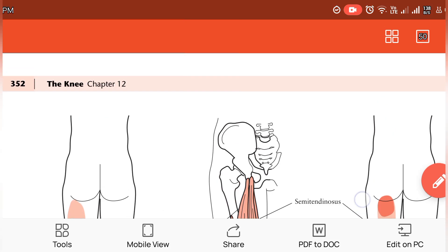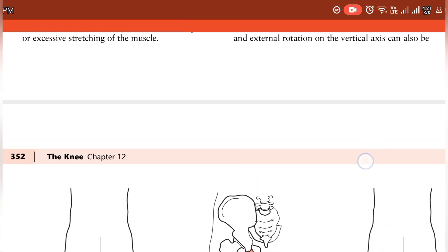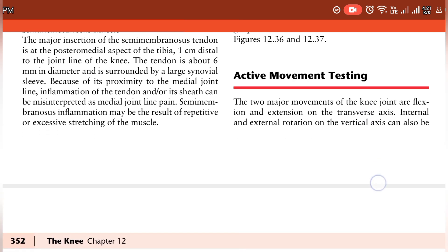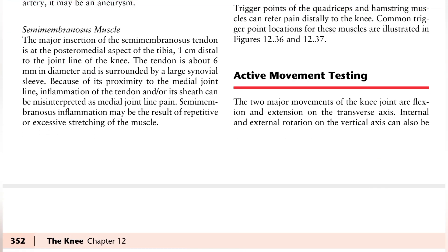Next, we will talk about active movement testing. Two major movements of the knee joint: one is flexion and one is a transverse axis. We will talk about internal and external rotation.